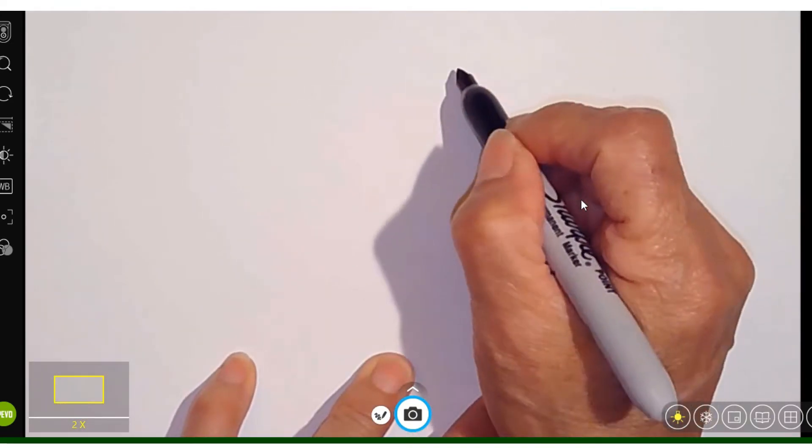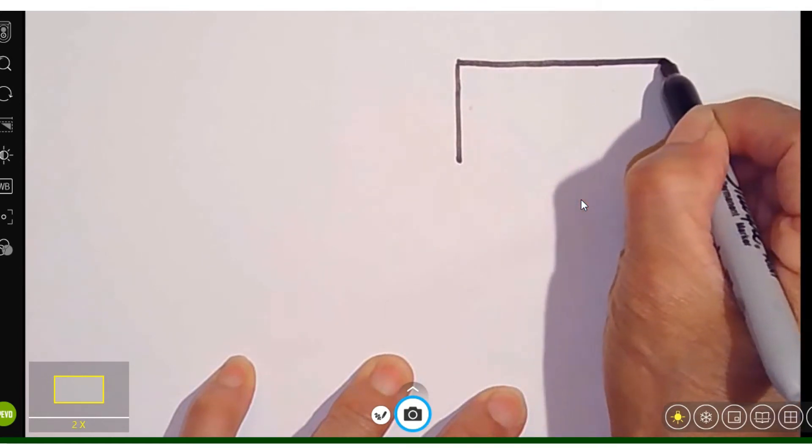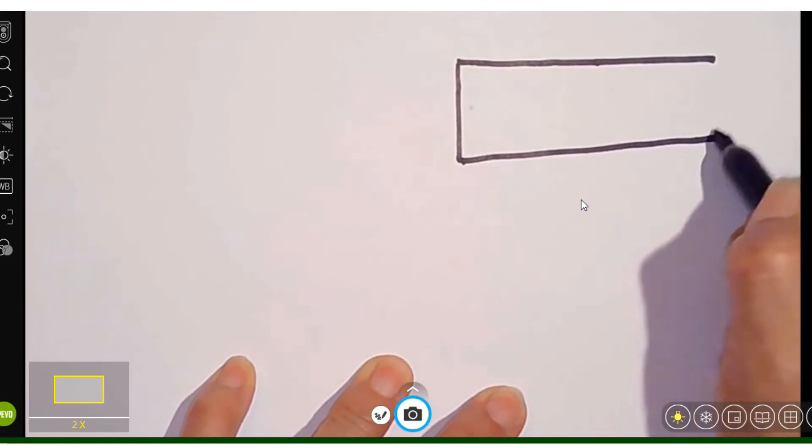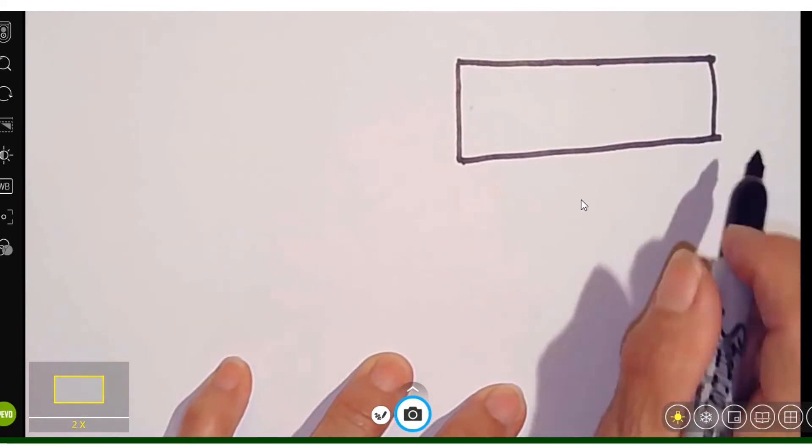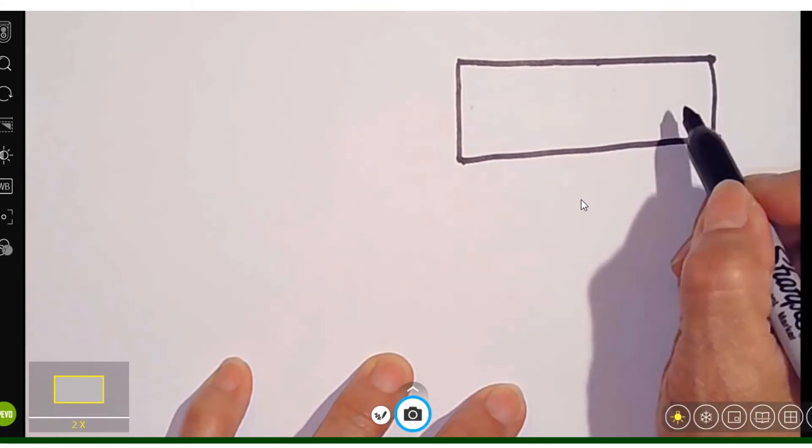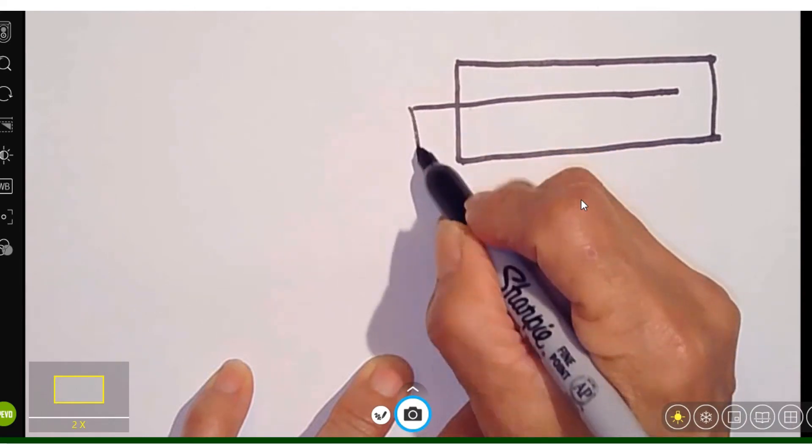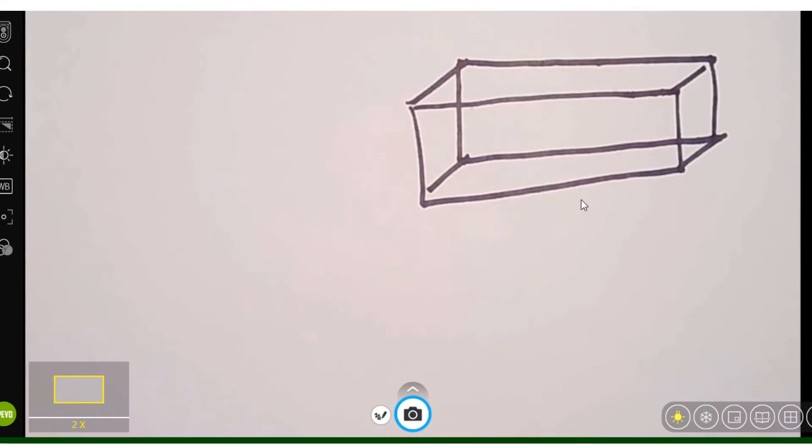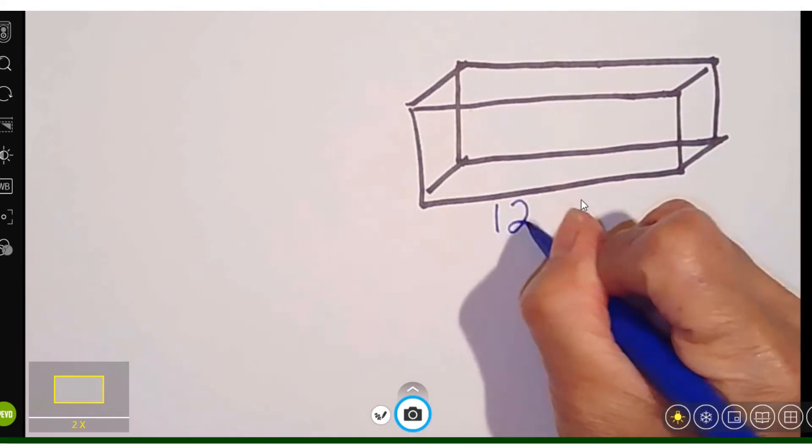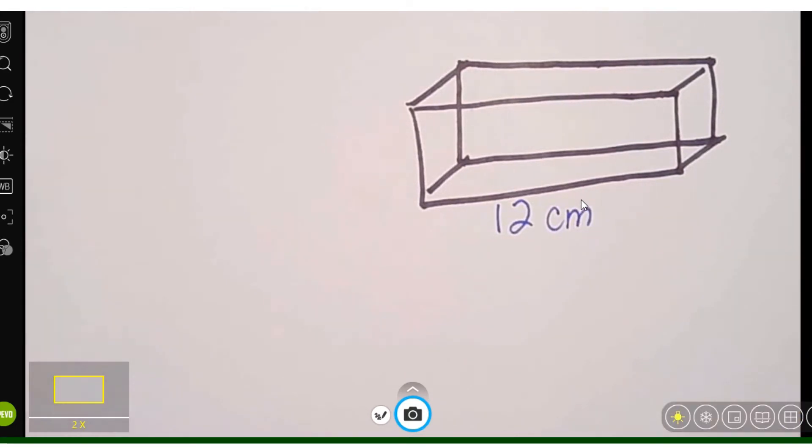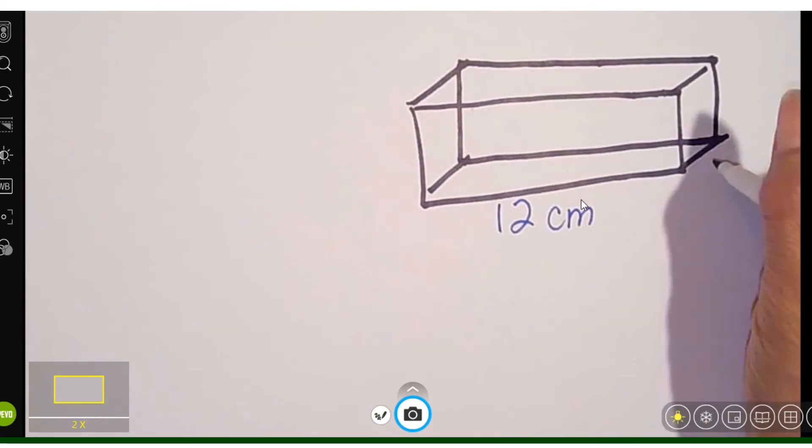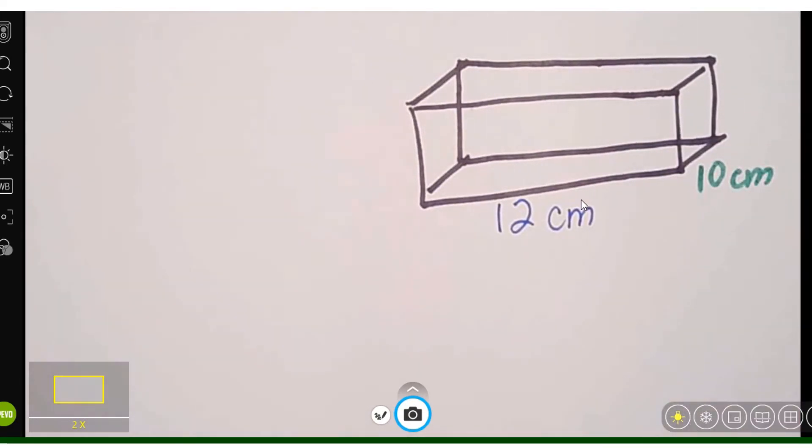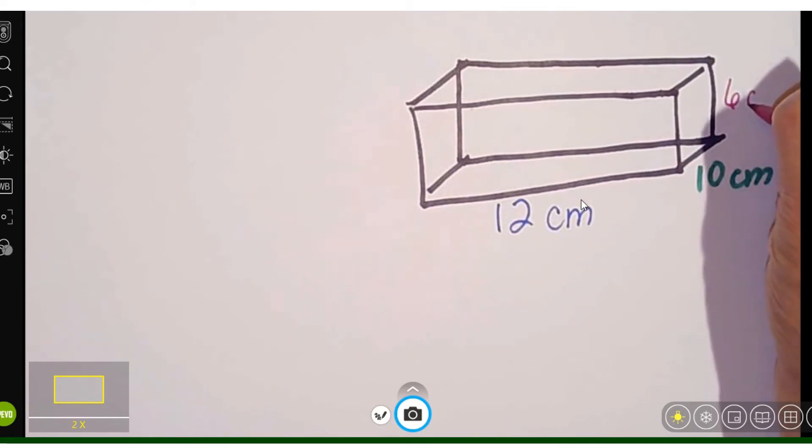First I'm going to draw my three-dimensional figure. I'm going to label my three-dimensional figure. Making this 12 centimeters, I'll make this other one 10 centimeters, and I will make this one 6 centimeters. There we go.